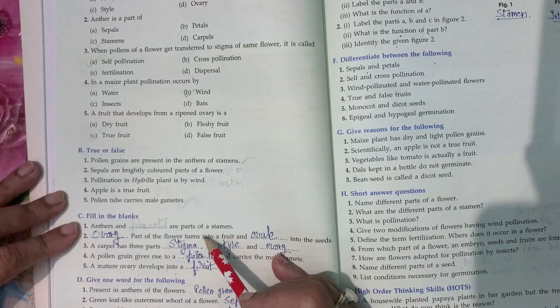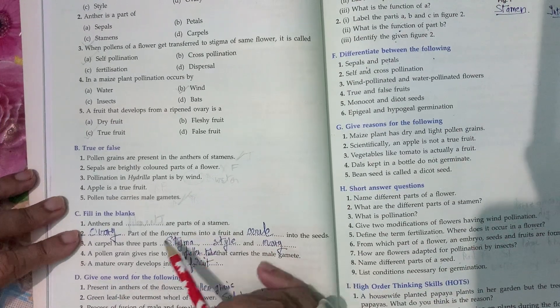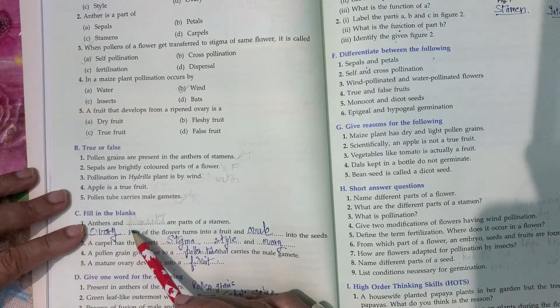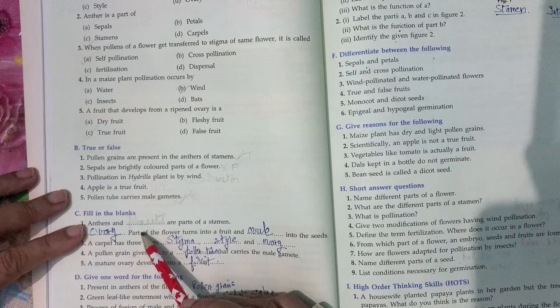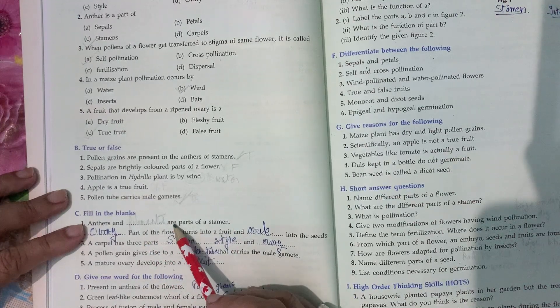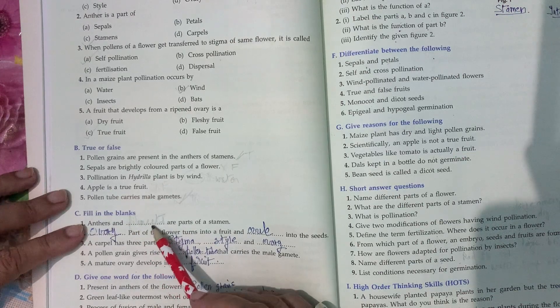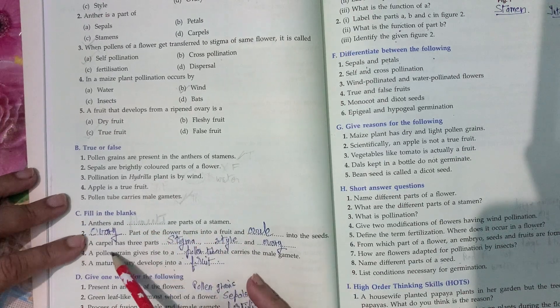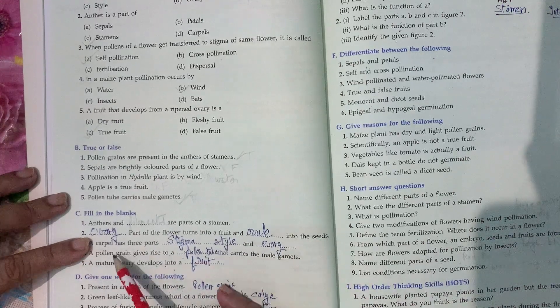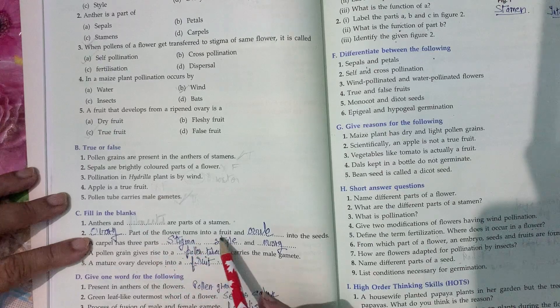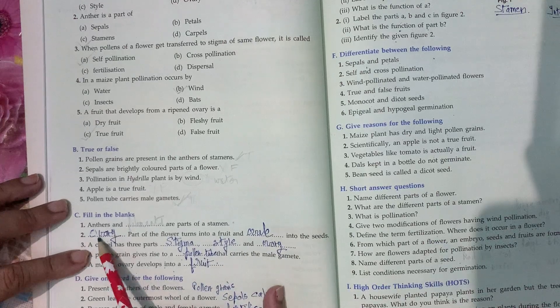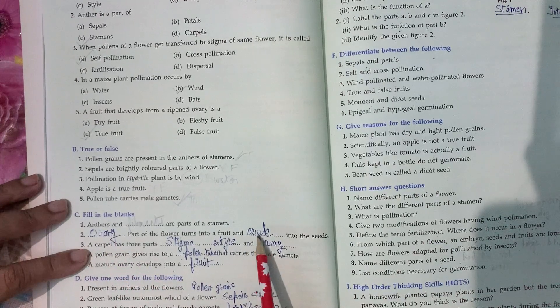Now, fill in the blanks. Anther and blank are parts of stamens. Yes, anther and filaments are parts of stamens. Second, which part of the flower turns into a fruit and which into the seed? Ovary of the flower turns into fruit and ovule changes into seed.